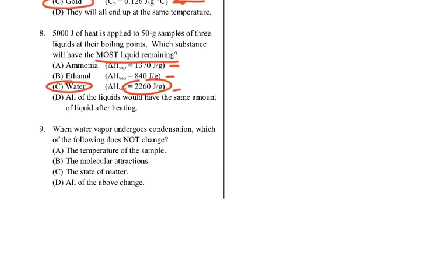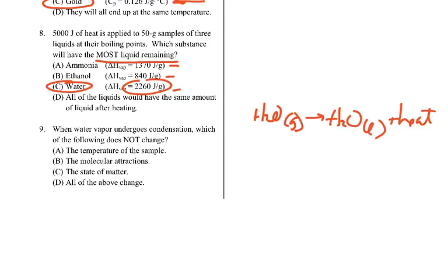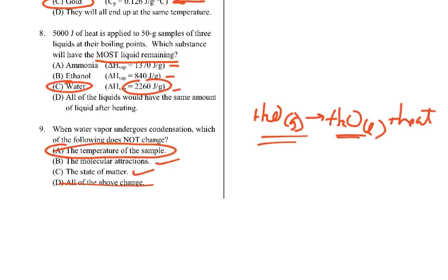Number 9: when water vapor undergoes condensation, that's a gas turning into a liquid. Heat is on the more solid side. Which of the following does not change? During a phase change, the temperature does not change. Molecular attractions would get stronger. The state of matter changes from gas to liquid. So the answer is A — temperature stays the same.